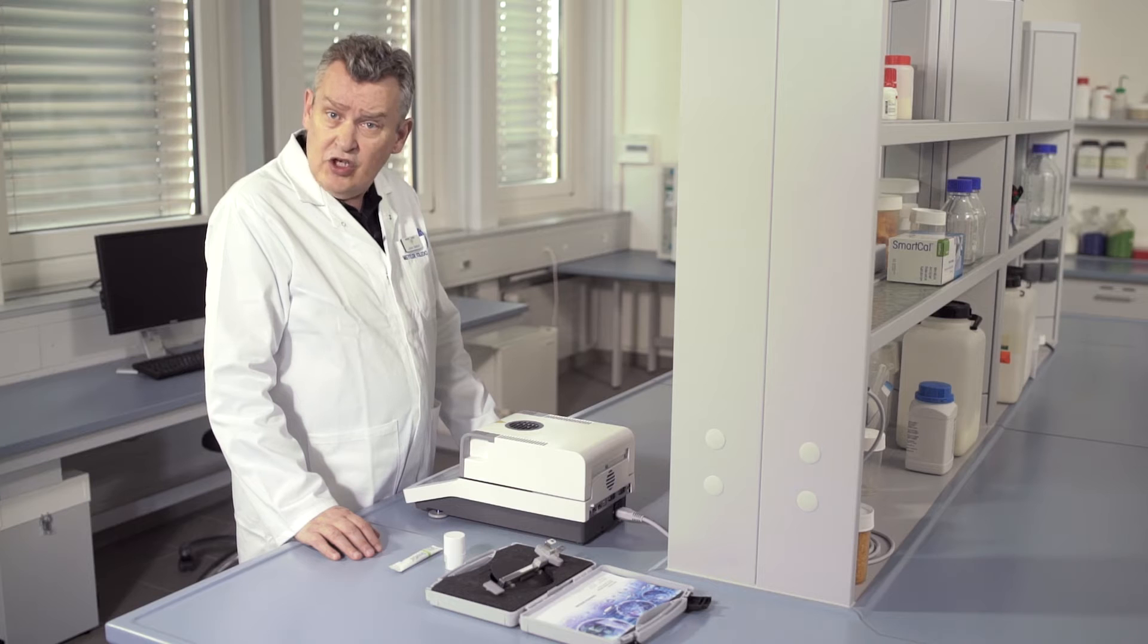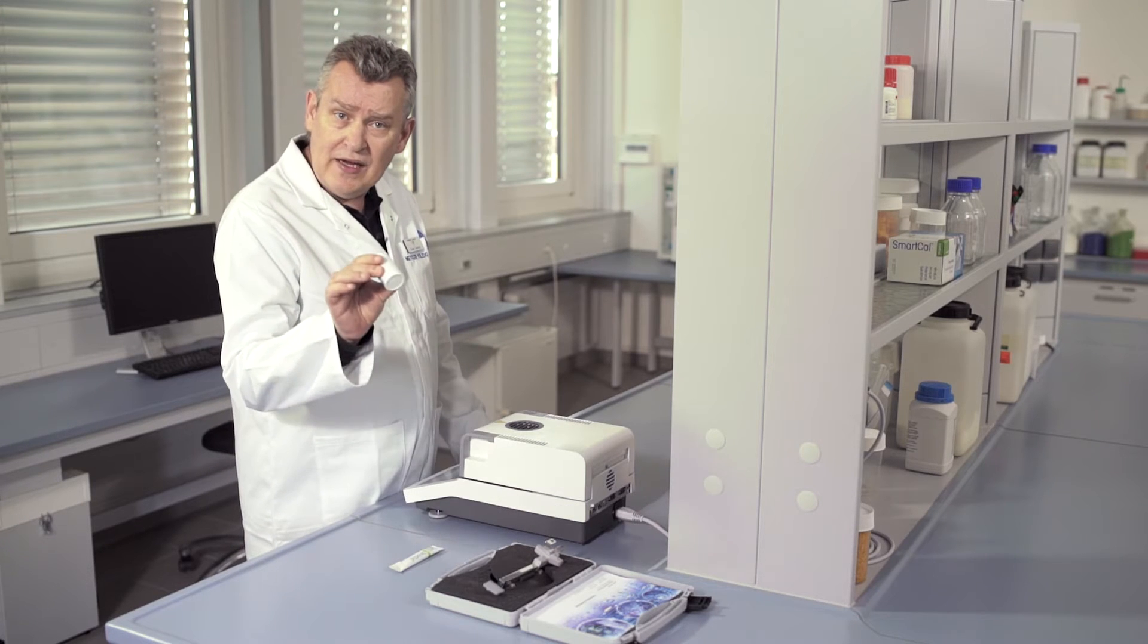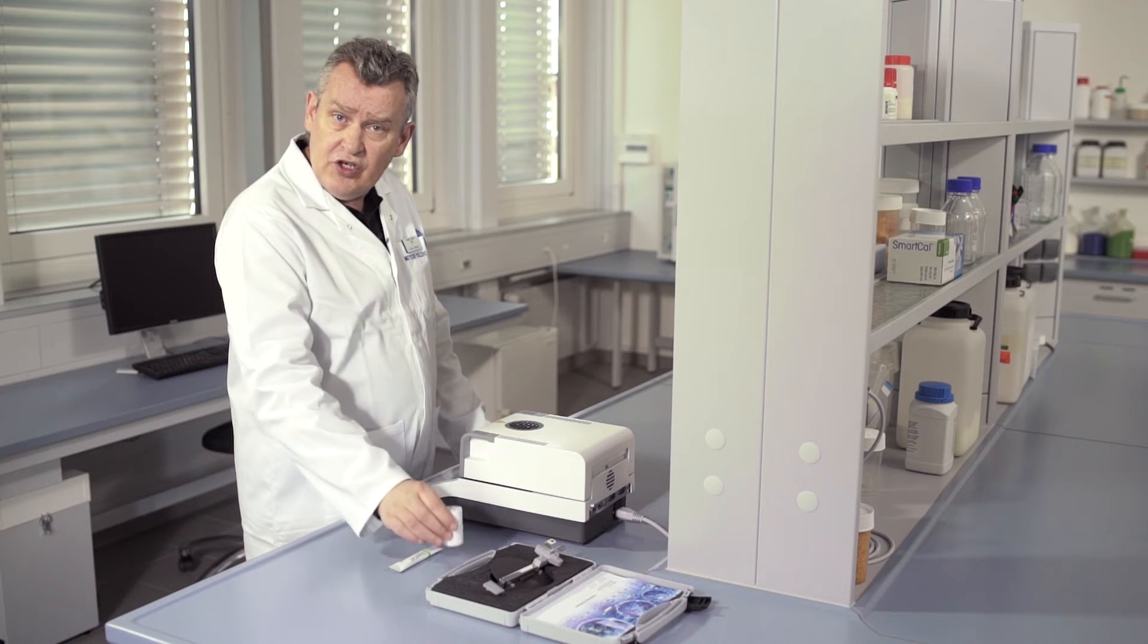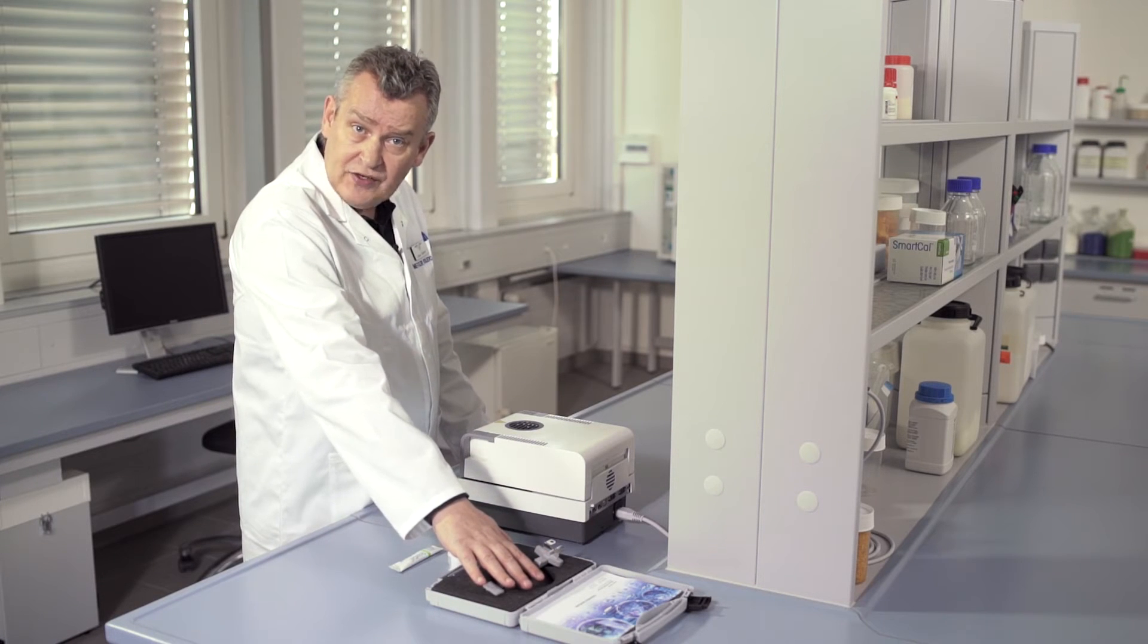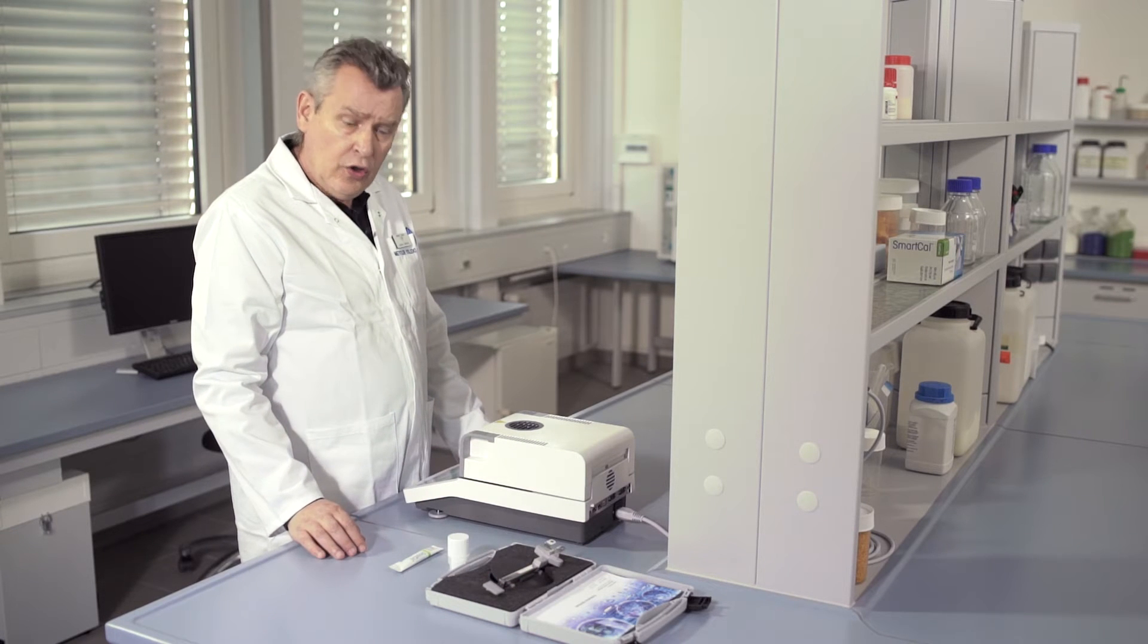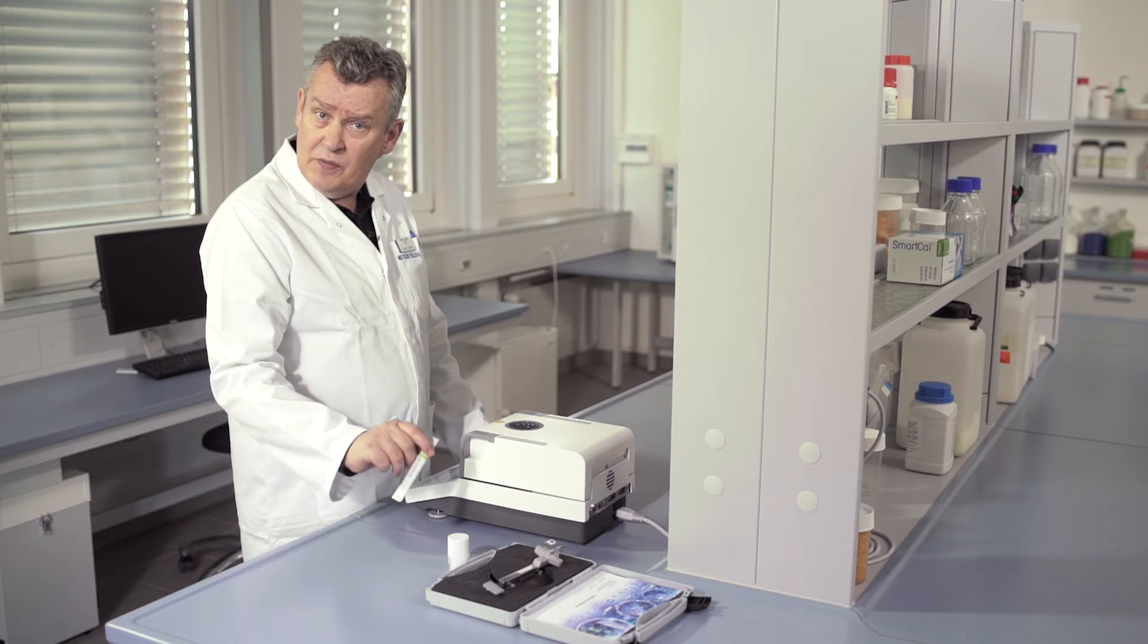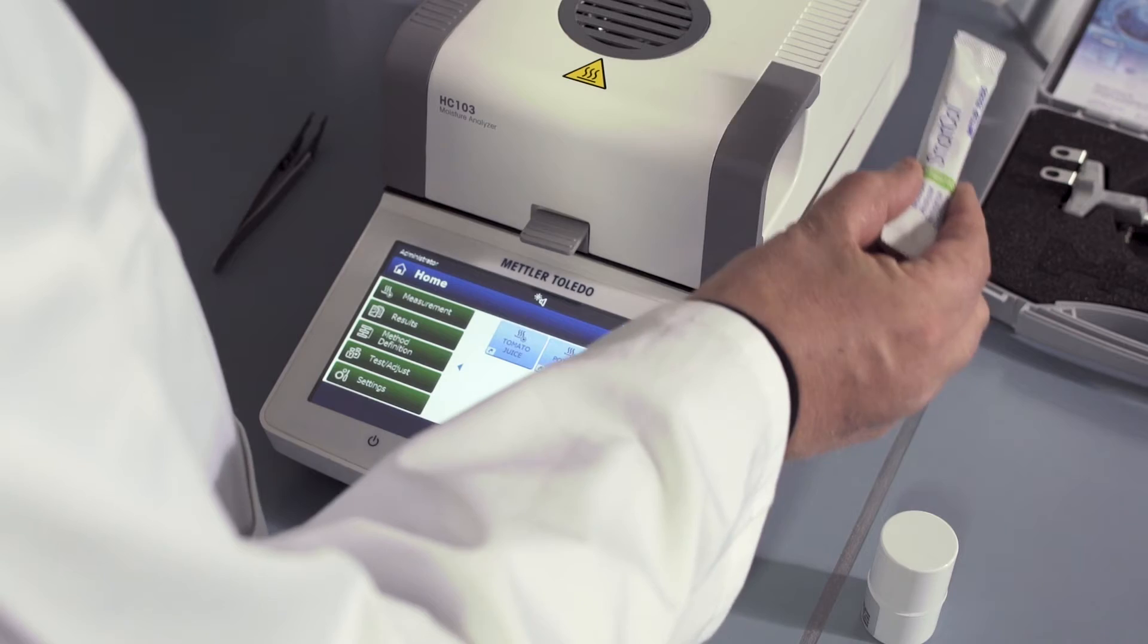Test and adjust the weighing unit using a calibrated weight and test and adjust the heating unit using the optional electronic temperature calibration kit. Furthermore, you can perform a holistic instrument test using Smart Cal. This is a quick and easy test to verify the overall performance of your halogen moisture analyzer.